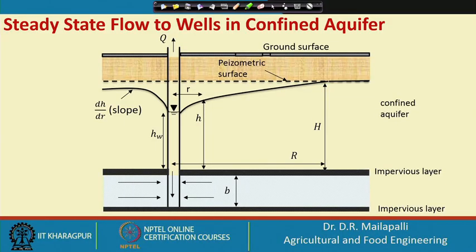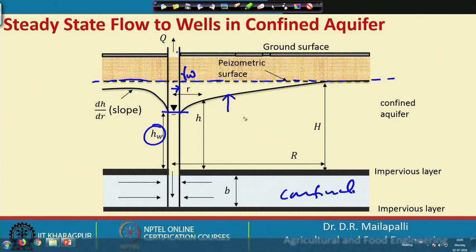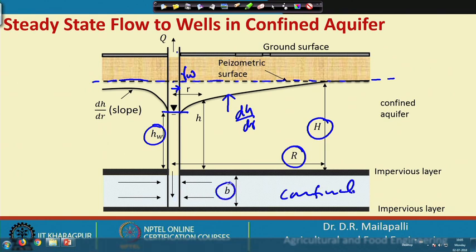In case of confined aquifer, as we have seen in the previous lecture, the first thing is the static water level, which is also called piezometric surface because this is a confined aquifer. This is the pumping water level H_w, R_w is the radius of the well, and this is a drawdown curve with dh/dr. The static water level, r is the radius of influence, and b is the thickness of the aquifer. Water is flowing horizontally to the well screen and the well is fully penetrated to the aquifer.